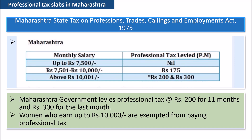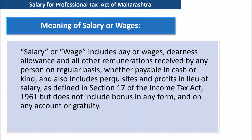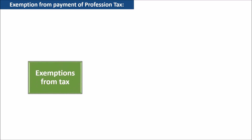Let's understand the meaning of salary or wages for the purpose of this act, as this decides the slab for liability. Salary or wages includes pay or wages, dearness allowance, and all other remunerations received by any person on a regular basis, whether payable in cash or kind, and also includes perquisites and profits in lieu of salary as defined in Section 17 of the Income Tax Act 1961. But it does not include bonus in any form or gratuity.